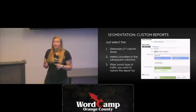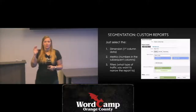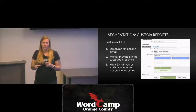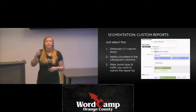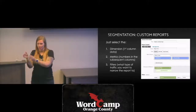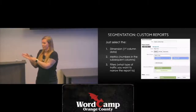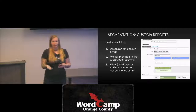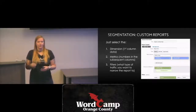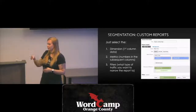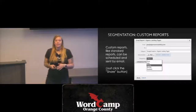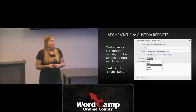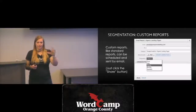To create a custom report, go to the Customization section and select your dimension — think of dimension as the first column, whatever you want to see there. Metrics are the numbers — the actual digits you want in the following columns. Pick your dimension, pick your metrics, and if you want to filter it — like United States desktop traffic only — set that up as a filter. Custom reports can be scheduled and emailed to you automatically, exported to PDF, and they'll live in your Customization section.